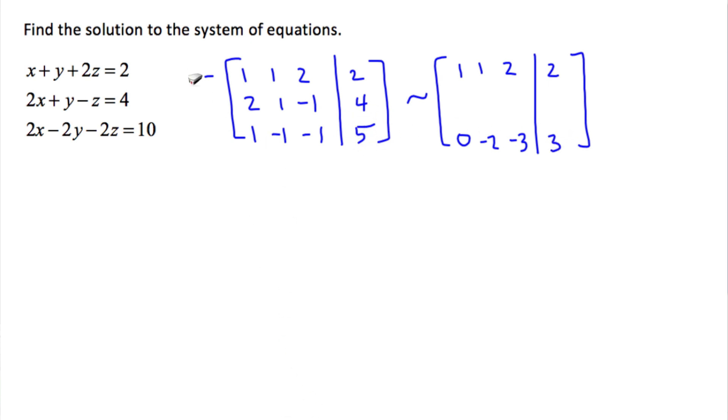Then I'm going to multiply by negative 2 and get rid of this value. Negative 2 plus 2 is 0. Negative 2 plus 1 is minus 1. Negative 4 minus 1 is minus 5. And negative 4 plus 4 is 0.